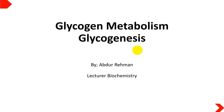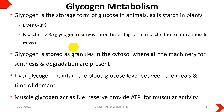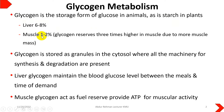Hello viewers, welcome back to Students Diaries. Today we will discuss glycogenesis, which is a subtopic of glycogen metabolism. Glycogen is the storage form of glucose in animals, while starch is the storage form in plants. In humans, the liver contains about 6 to 8 percent glycogen, while muscles contain 1 to 2 percent glycogen.